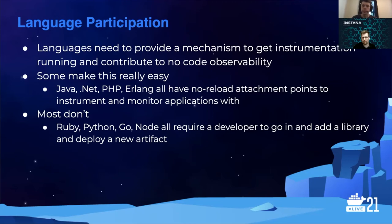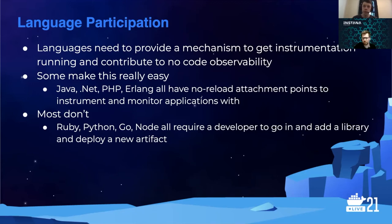The programming languages your team uses have to be willing to be observed to achieve observability. In some cases this is easy — things like Java, .Net, PHP, and Erlang all have no-reload attachment points. If you launch our agent and you're a Java shop, we'll find every single JVM and automatically instrument your Java applications. But a lot of languages don't have these nice features — Ruby, Python, Go, Node — you basically have to add the library and deploy a new artifact. This is one of the big barriers to observability that no-code observability is looking to break through: you shouldn't need to do that work. We should be able to do it for you, without affecting your application.